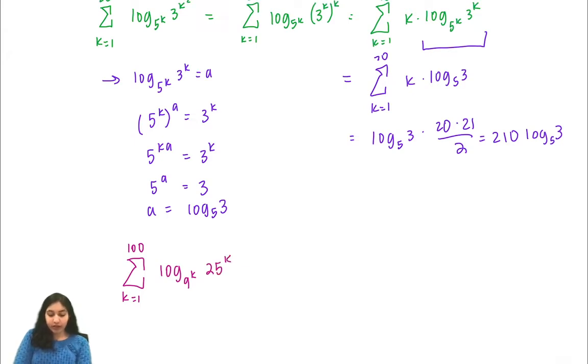We're going to rewrite 9 and 25 in this case as 3 to the 2 and 5 to the 2. So here we have log of 3 to the 2 to the k and here we have 5 to the 2k.